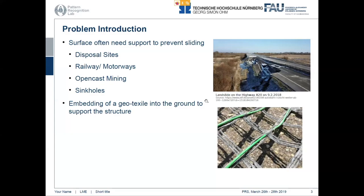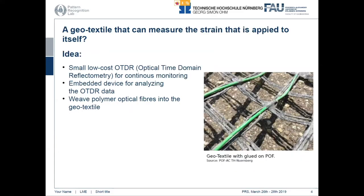Every time when you have a slope that cannot be vegetated, what you usually do is embed a geotextile into the ground to strengthen the structure and prevent it from sliding. But the other thing is you want to monitor what's going on down there, and this is where this project comes in. We use optical fibers measured by our optical time domain reflectometer, and with this device we can see what's going on under the ground, in theory.